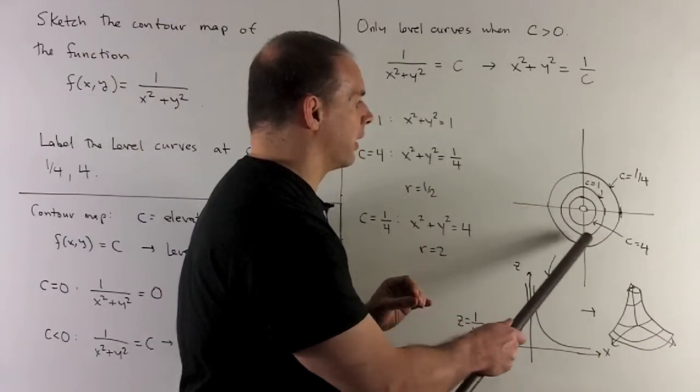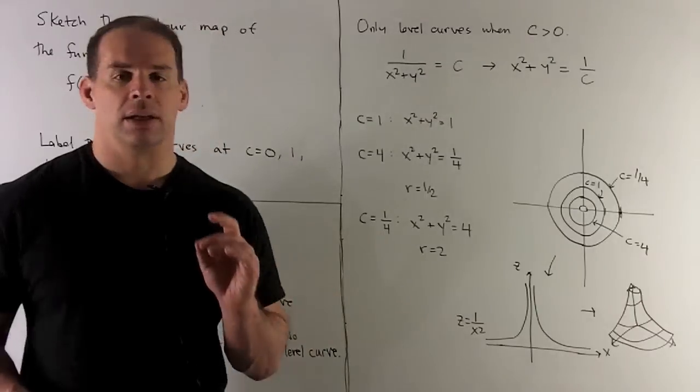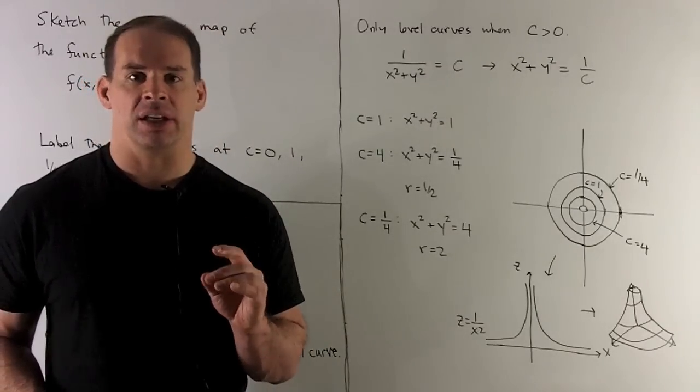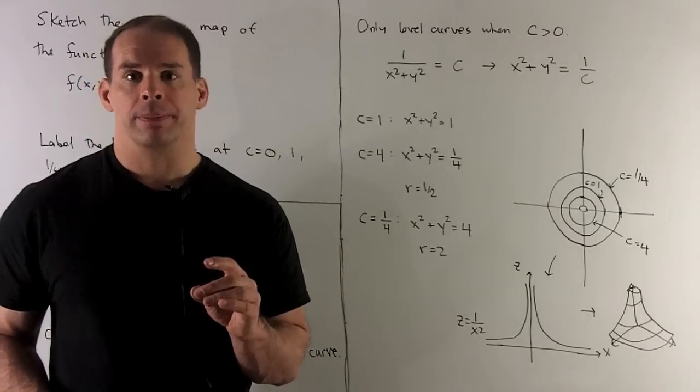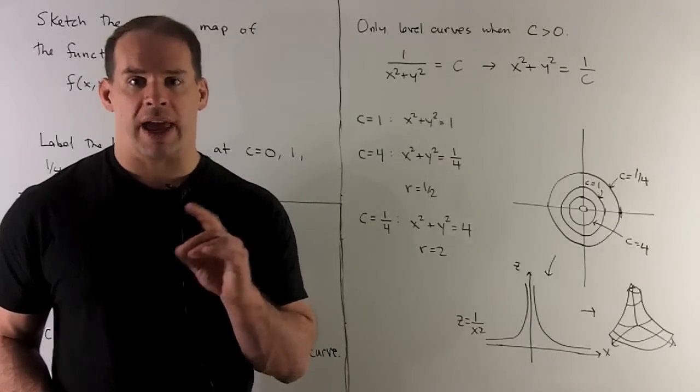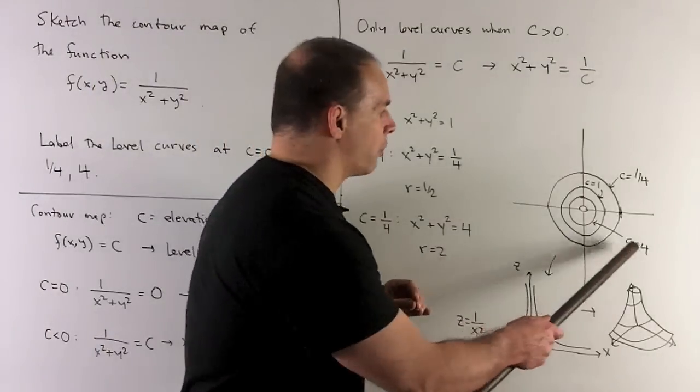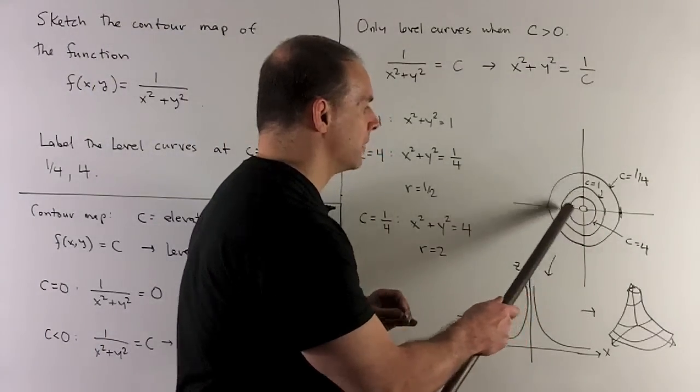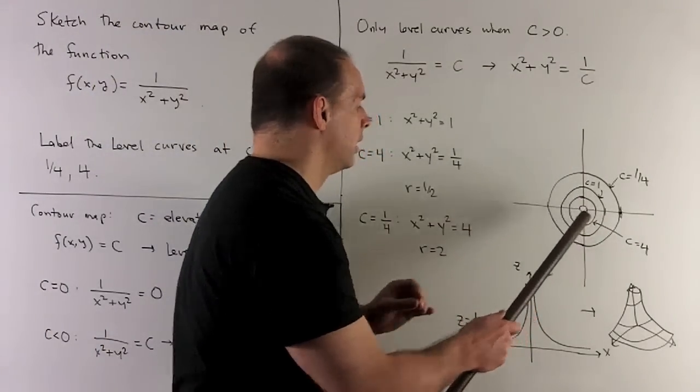Next, let's try c = 4. In this case the radius is going to be 1/2. So for c = 4 we'll have this contour, this level curve right here.